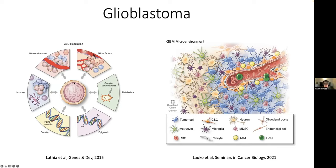It's thought that recurrences are really driven by the existence of these cancer stem-like cells — GBM stem-like cells. These cells can survive radiation and chemotherapy and reconstitute the tumor after treatment. There's a lot of work on the biology of GBM stem-like cells, with lots of influences on their regulation from cell-intrinsic mechanisms like their mutations, driver mutations, and epigenetic state, as well as influences from the microenvironment or cell-extrinsic factors.